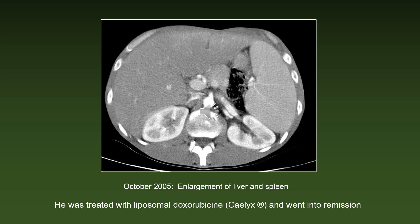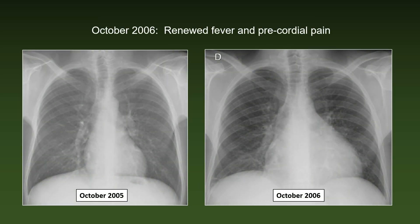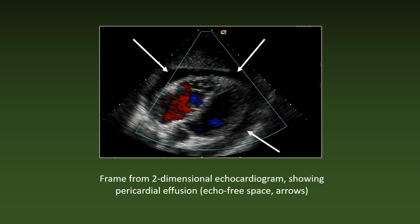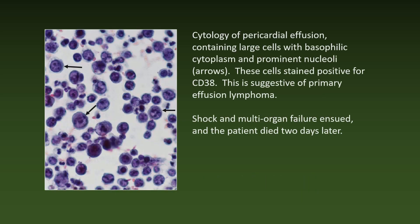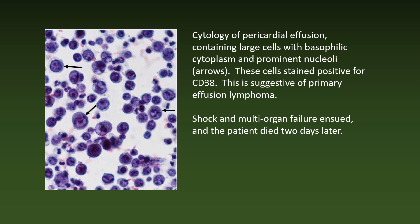Here is a slice of the abdominal CT showing a large liver and an even more enlarged spleen. In October 2006, however, he had renewed fever and new precordial pain. Note the increase in the size and tent-like appearance of the heart in October 2006. A frame from a two-dimensional echocardiogram shows the pericardial effusion, that is the echo-free space shown with the arrows. The pericardial effusion contained large cells with a basophilic cytoplasm and prominent nucleoli. These cells stained negative for CD20 but positive for CD38, suggestive of primary effusion lymphoma.